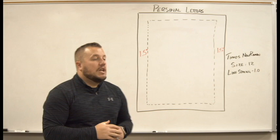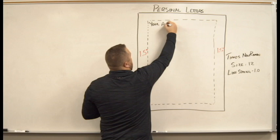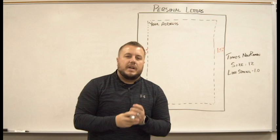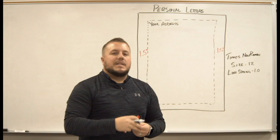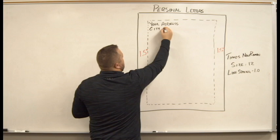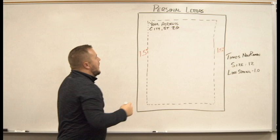Starting out with a personal letter, first and foremost you're going to write your address — your street address. Your address is your street number, or house number, and the street name. The second line is your city, state, and zip. So on the second line down we go city, state, and zip. And then below that we're going to put our date.